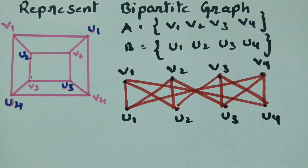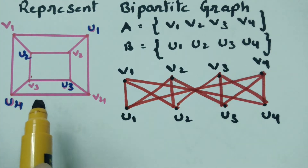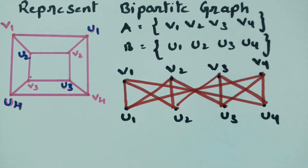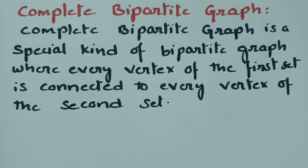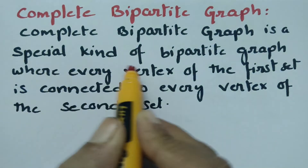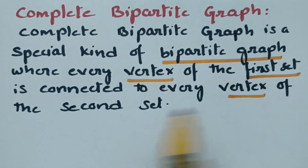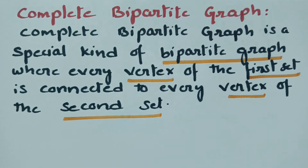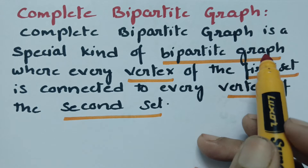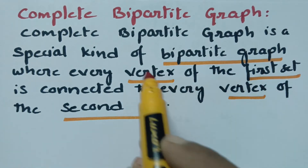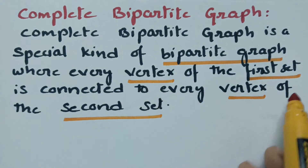According to our definition, we check the total number of vertices and split them into two disjoint sets — v1, v2, v3, v4 and u1, u2, u3, u4. Next, the most important concept is the complete bipartite graph. A complete bipartite graph is a special kind of bipartite graph where every vertex of the first set is connected to every vertex of the second set.